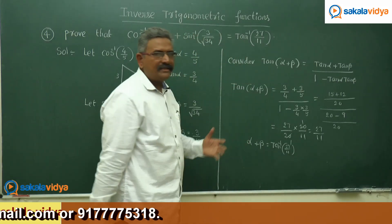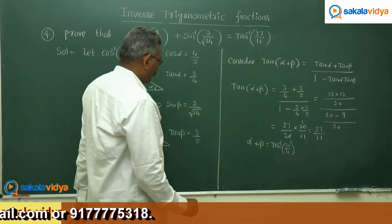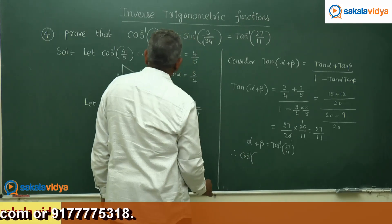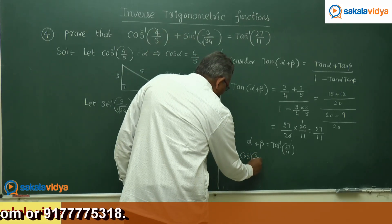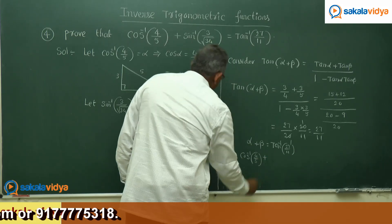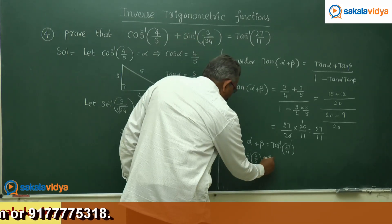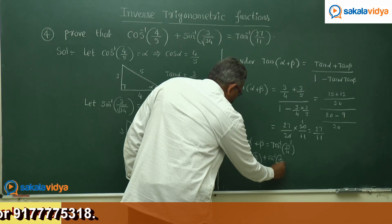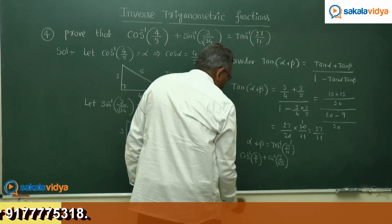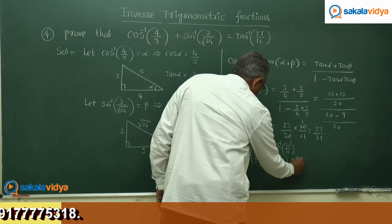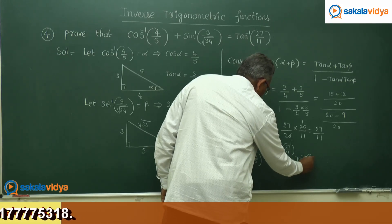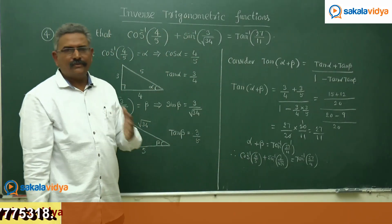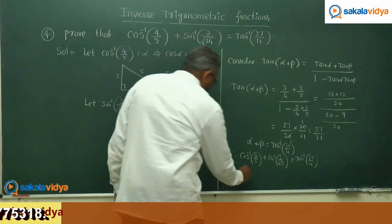So alpha plus beta is tan inverse of 27 by 11. What is alpha and what is beta? Alpha is cos inverse of 4 by 5 and beta is sin inverse of 3 by root 34. Therefore cos inverse of 4 by 5 plus sin inverse of 3 by root 34 equals tan inverse of 27 by 11. Hence it is proved.